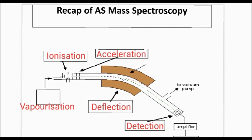Hopefully you've managed to identify these various stages. The first thing that happens, looking at the left-hand side, is that the sample has to be injected into the mass spectrometer, and at that point it needs to be vaporized.